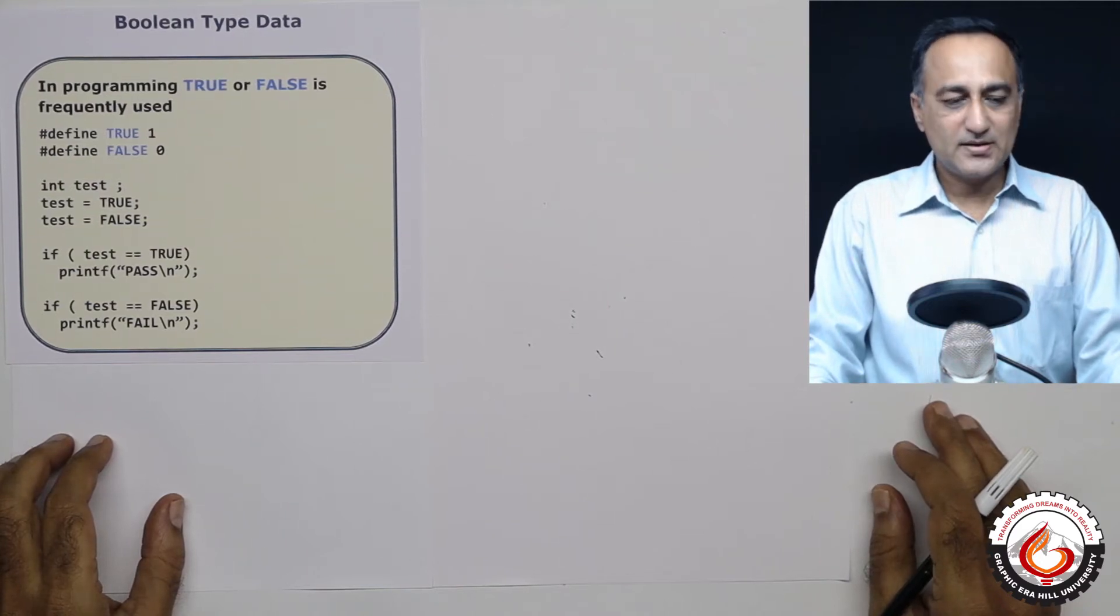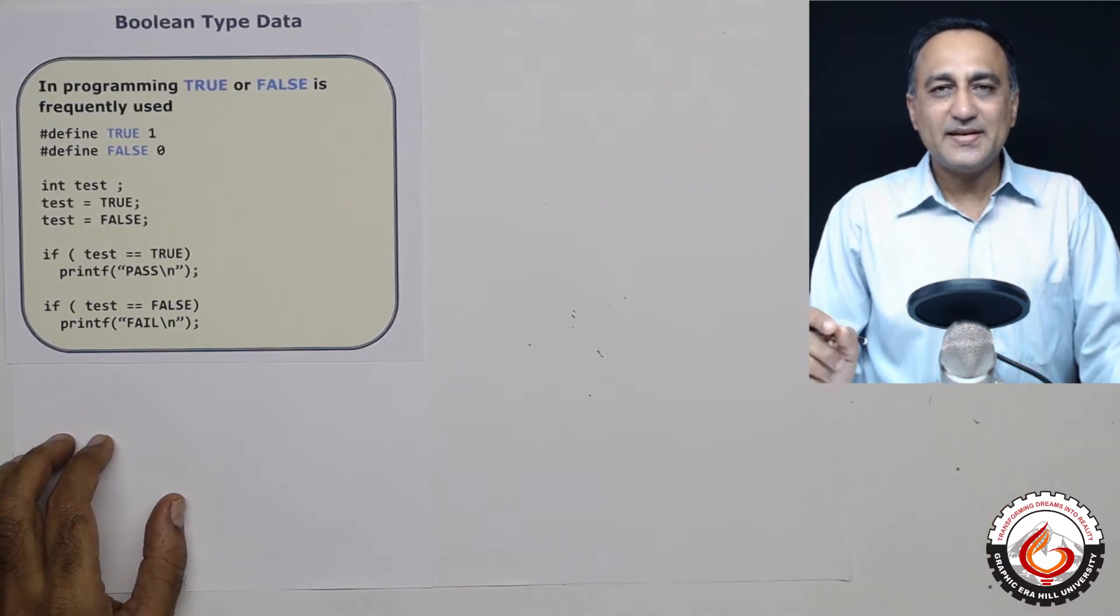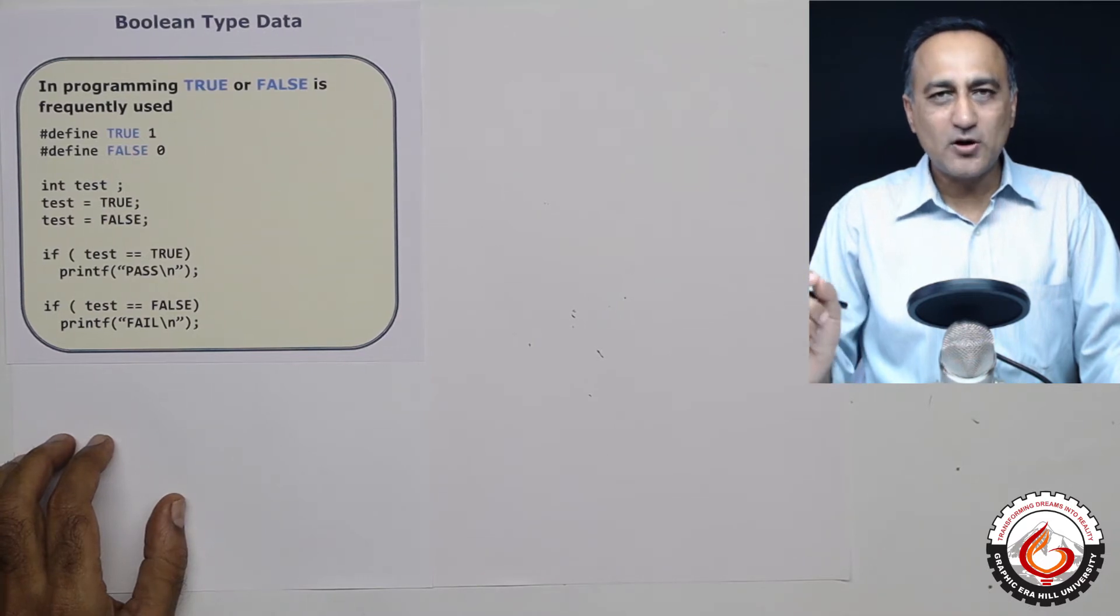The next type of data is the Boolean type of data. The word Boolean means it can have only two values, that means either true or false.